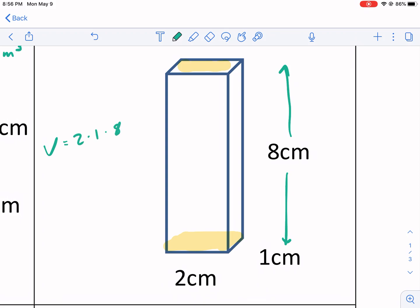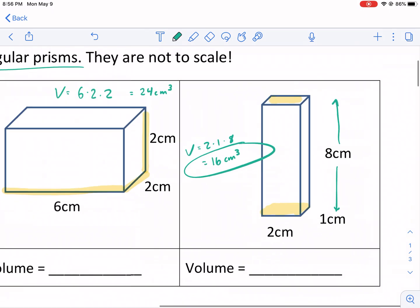We have 2 times 1 times our height, which is 8. 2 times 1 is 2. Times 8 is 16 centimeters. Don't forget, cubic units. That's our final answer.